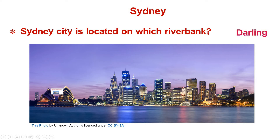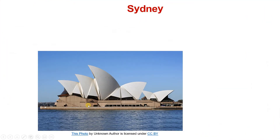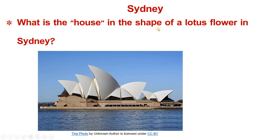If you see here, something is looking different. It is in lotus shape. The house in the shape of a lotus flower located in Sydney is called the Opera House.